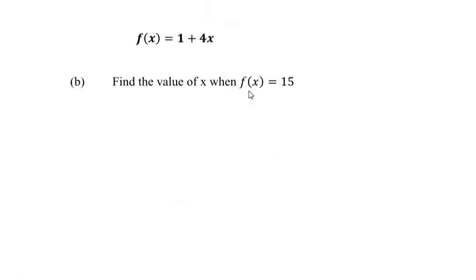Now let us quickly look at part b of this question. Find the value of x when the value of f(x) is 15. This was the function which was given in part a, that is f(x) equal to 1 plus 4x. Here they have mentioned that the value of f(x) is 15. That means in this equation, in place of f(x) I am going to substitute 15. So 15 is equal to 1 plus 4x.